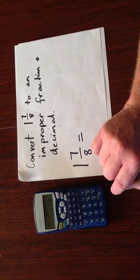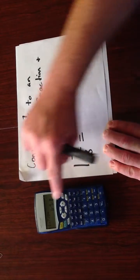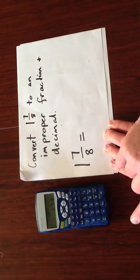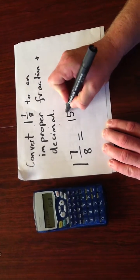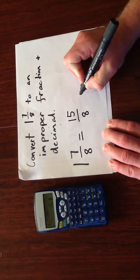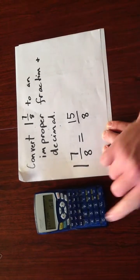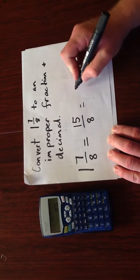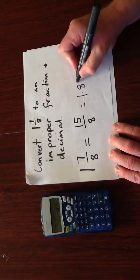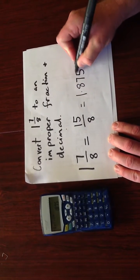Now to convert to an improper fraction, we need a second function and then the fraction button. And you can see the answer is 15 over 8. To convert to a decimal, just press the fraction button and the answer is 1.875.